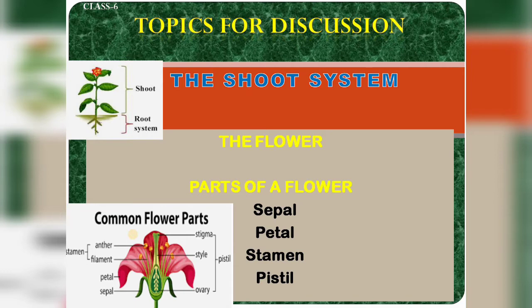A typical flower has four main parts: sepal, petal, stamen and pistil. The thalamus bears these parts; thalamus means the main head or receptacle of the flower.